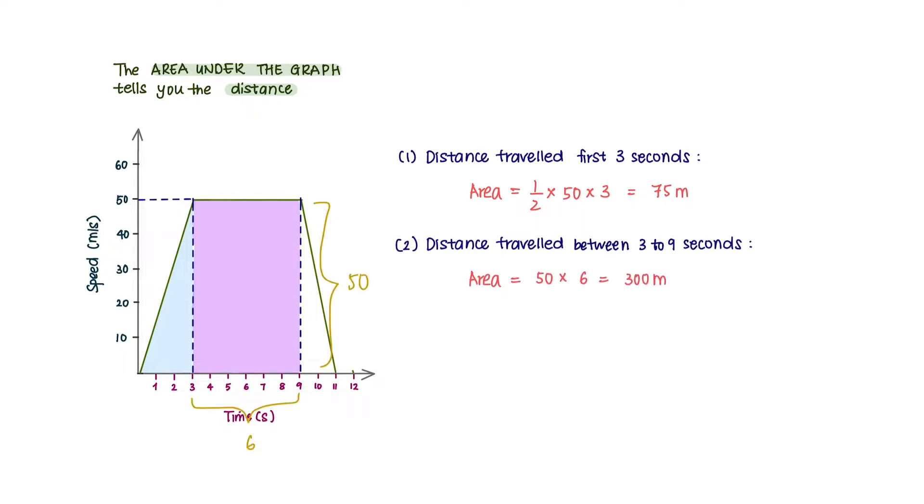You can obtain the dimension of the rectangle to get the area. Repeat the step for the last part, and the total value will give you the total distance traveled in the period of 11 seconds.